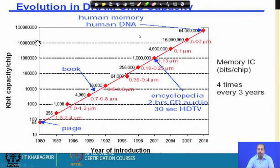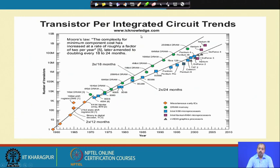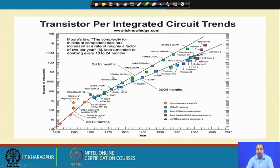Memory IC capacity is becoming 4 times every 3 years roughly. If you plot the number of transistors per integrated circuit, the trend started in the 1960s and has gone up following Moore's Law. The complexity for minimum component cost has increased at a rate of roughly a factor of 2 per year, later amended to 18 to 24 months. As the technology comes to a saturation point, it advances to the next stage and Moore's Law continues to hold.